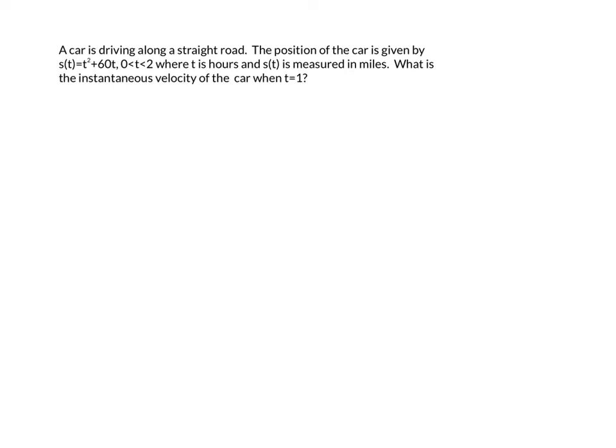So we have a car driving along a straight road, and the position of the car is given by t squared plus 60t when t is between 0 and 2. And t is measured in hours, and s of t is measured in miles, and we want to know the instantaneous velocity of the car when t is 1.